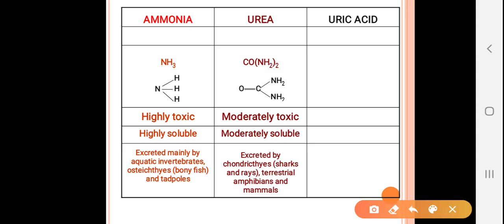The second one is urea. Urea is less toxic, and the formula is CO(NH2)2. It is moderately toxic and moderately soluble in water, so it requires less water to excrete. Excreted by terrestrial amphibians and mammals.